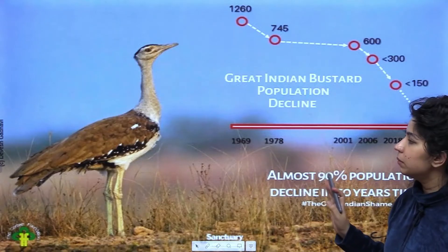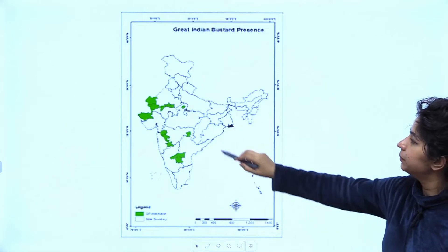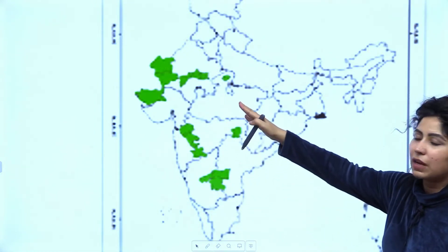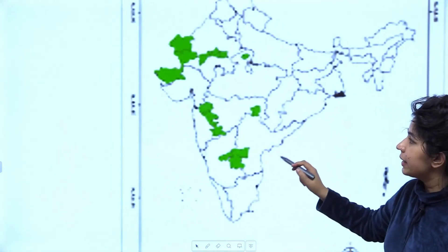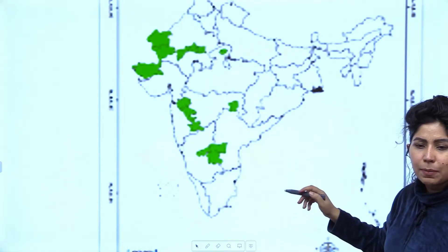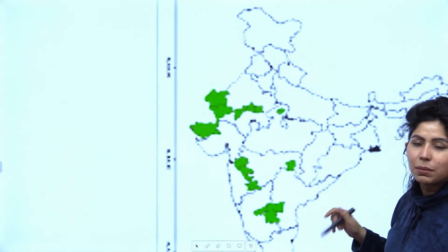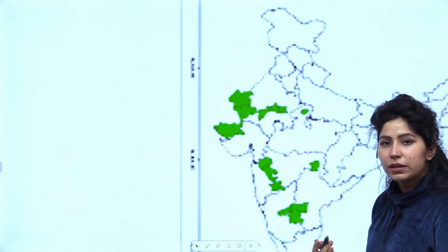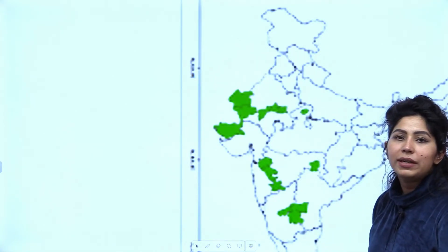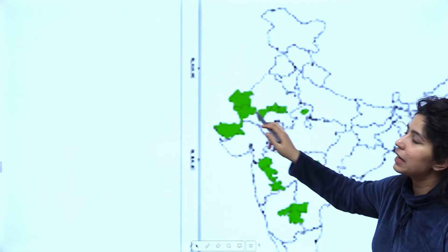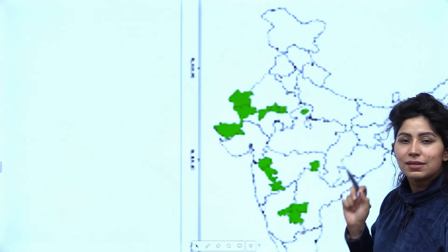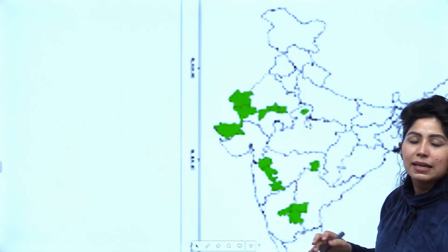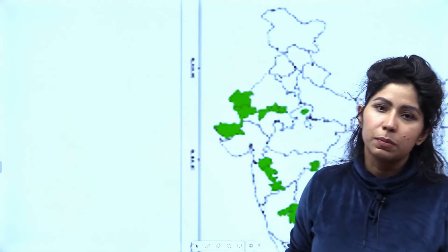Looking at the map, the green areas show the states where the Great Indian Bustard is found — parts of Rajasthan and Gujarat, some parts of Maharashtra, Andhra Pradesh, and Karnataka. These are the places where the Great Indian Bustard's habitat used to be. But right now, this bird has been restricted to only a part of Rajasthan. Desert National Park, located in the Jaisalmer area of Rajasthan, is key. Great Indian Bustard is the state bird of Rajasthan, and the Desert National Park houses the last surviving population of this bird. The population was around 1,300 in 1969, came down to 745 in 1978, and as of 2020 there are less than 150 birds left.